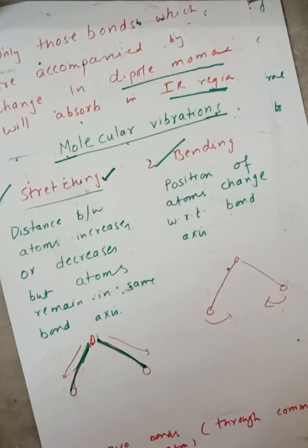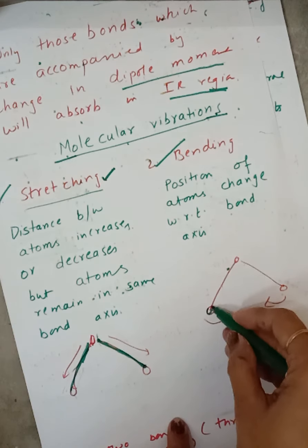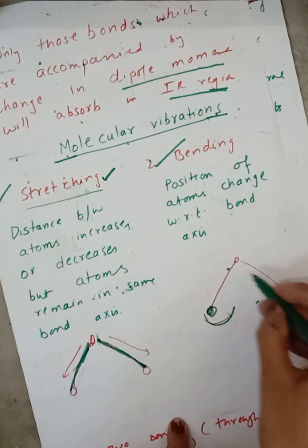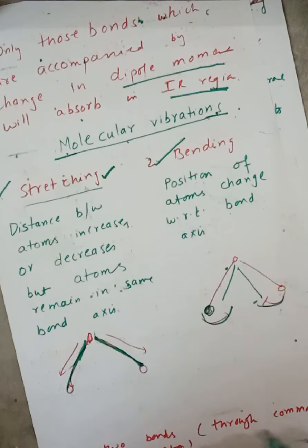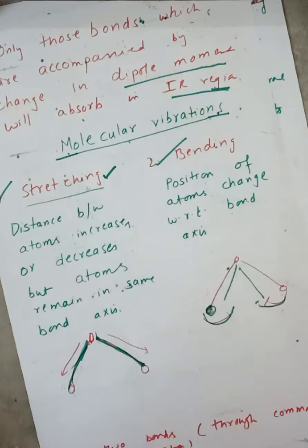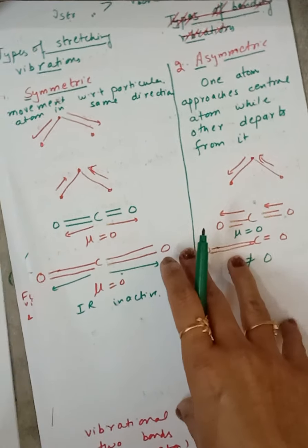The second type of molecular vibration is bending vibration. In bending vibration we can change the bond axis — the bond angle may change and these atoms can change their bond axis. So in stretching, the bond axis remains the same, and in bending there is a change of bond axis.